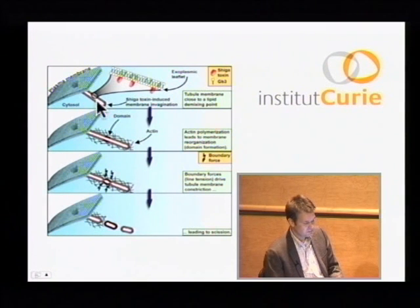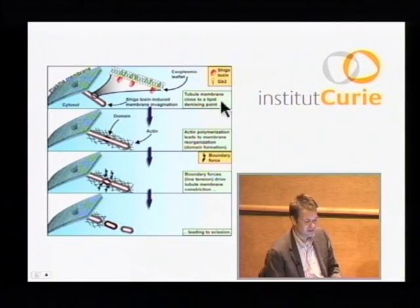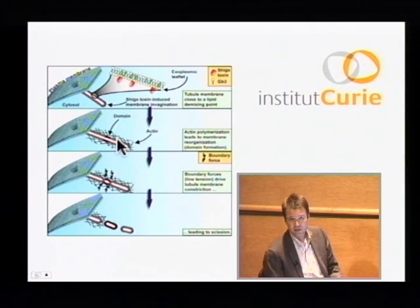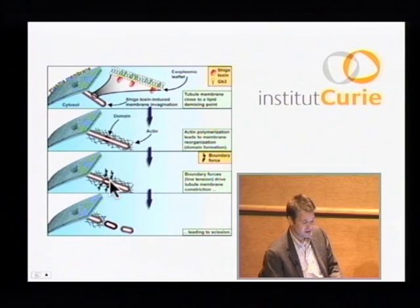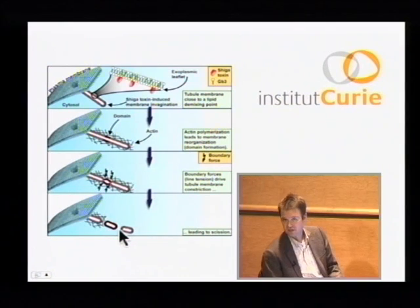Let me summarize these findings in a schematic model. A Shiga toxin-induced endocytic plasma membrane invagination is shown that we expect to be close to a lipid demixing point at physiological temperature. The polymerization of actin on the membrane leads to reorganization and domain formation, thereby generating squeezing forces at domain interfaces that then drive tube constriction and spontaneous scission. We suggest that this mechanism functions in some cases in synergy with dynamin, such as for Shiga toxin. Other endocytic tubular plasma membrane invaginations have been shown to be processed in a dynamin-independent manner altogether, and we expect our findings will create a conceptual framework for the analysis of the scission process in these cases. In summary, we are now facing a new biological paradigm that allows integrating physics related to domain formation with the cell biological function of membrane scission.